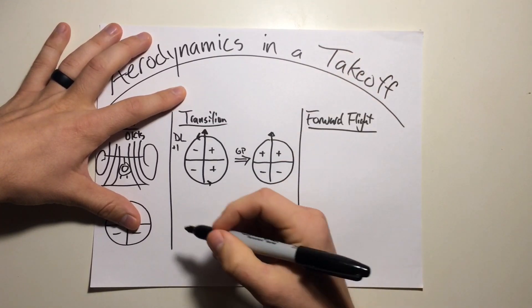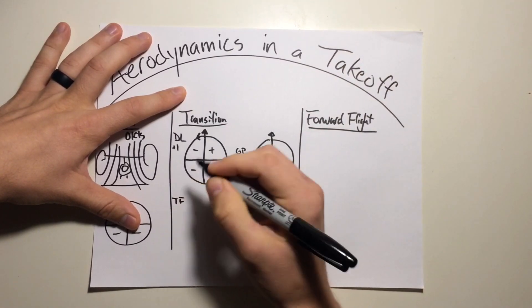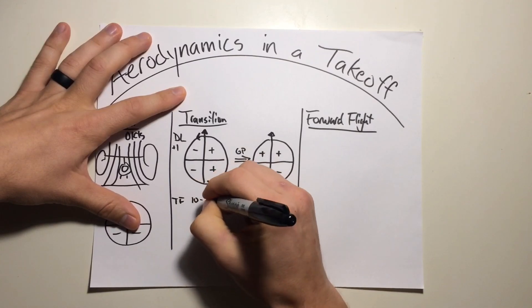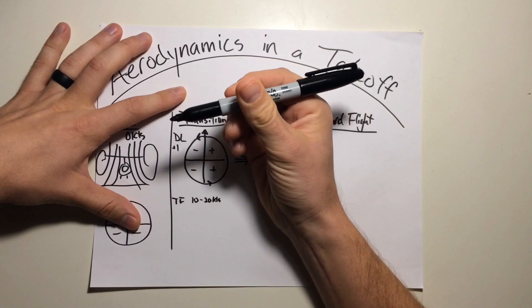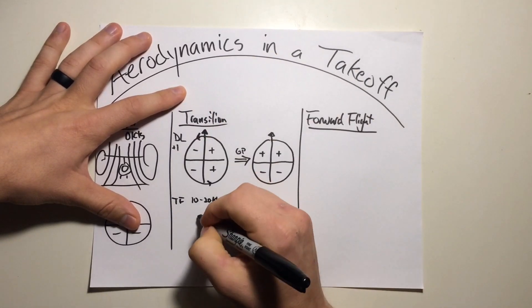Also as we're transitioning into forward flight, we're going to get into transverse flow effect. And this is that period in between 10 to 20 knots, when the airflow is more horizontal over the front half of the disc, and more vertical over the aft half of the disc.